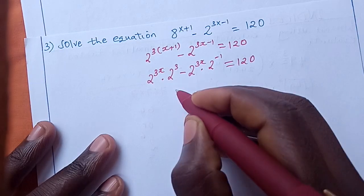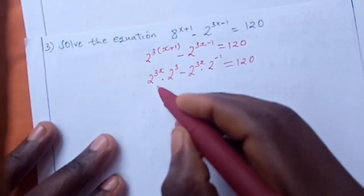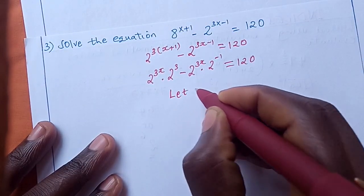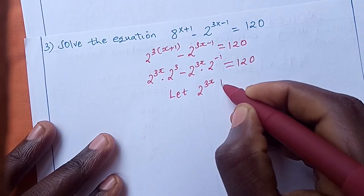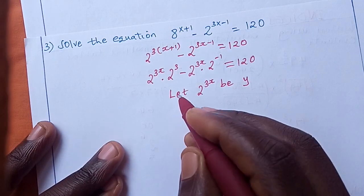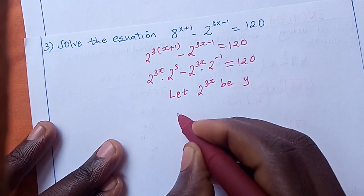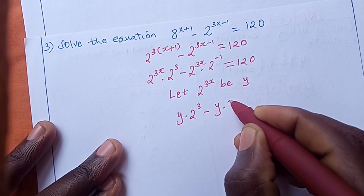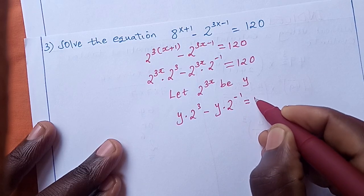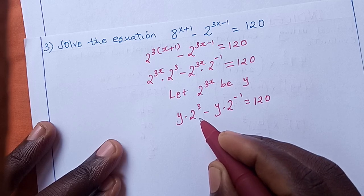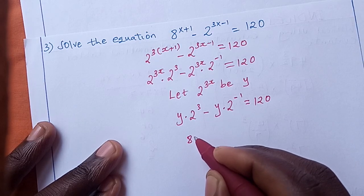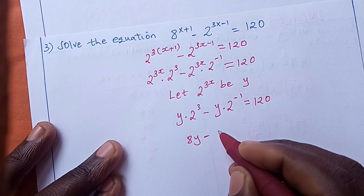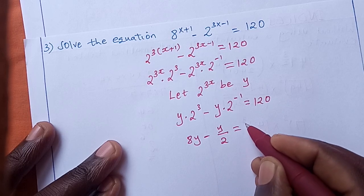We can see a common factor of 2 raised to 3x. We let y equal 2 raised to 3x, substituting wherever we see 2 raised to 3x. The expression becomes y multiplied by 2 raised to 3, minus y multiplied by 2 raised to negative 1, equals 120. Simplifying: 8y minus y over 2 equals 120.